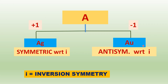Another notation uses G and U subscripts. G stands for 'gerade' and U stands for 'ungerade'. If A, B, or E is symmetric with respect to the center of inversion (character plus one in the table), then the G subscript is used. If the character is minus one — meaning anti-symmetric with respect to inversion — then the U subscript is used.